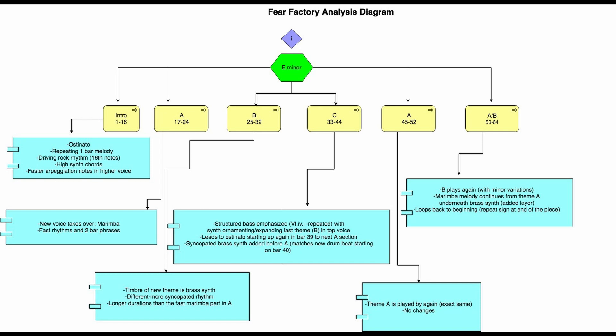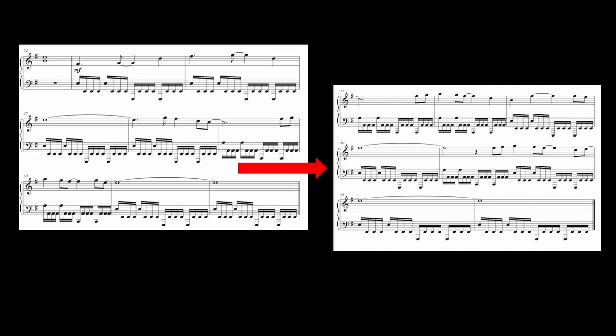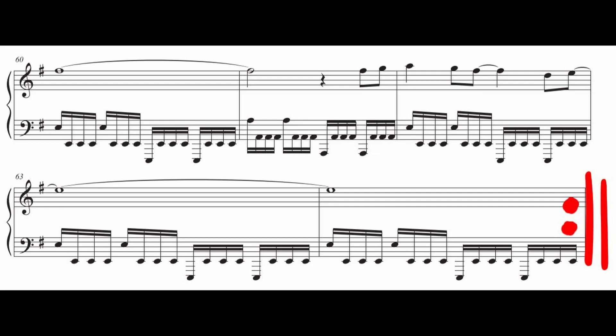Starting at bar 53, section A/B has both elements of A — the marimba melody — and B — the brass synth melody — layered together. This includes slight variations in the synth melody at bar 59, with different rhythms than the first B section at bars 25 to 32. The piece then ends at bar 64 by looping back to the beginning.